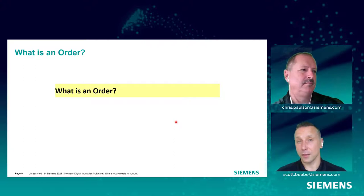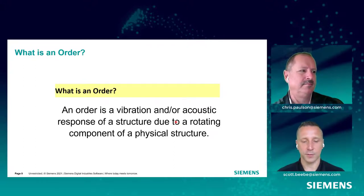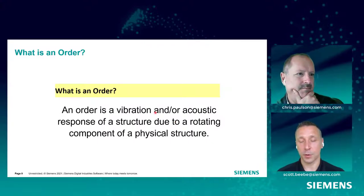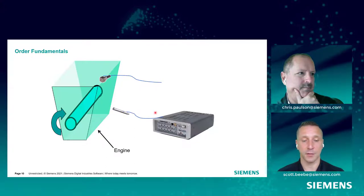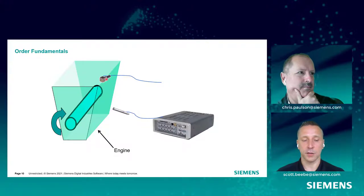All this brings us to what an order is. Here's the definition: an order is a vibration or acoustic response of a structure due to a rotating component. Let's start simple. If we have an engine with just one rotating component — a simple shaft — we can measure it using an acquisition system, using a tachometer on the shaft to calculate the speed, and measure vibration or sound using an accelerometer or microphone.